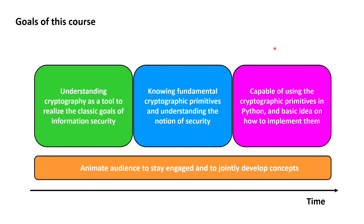Goal number three is that once you complete this course you should be able to apply your theoretical understanding of fundamental cryptography by using the various cryptographic primitives in Python, and even more, to have a basic idea on how to implement the majority of these primitives in Python yourself. I also have a goal for myself: for the whole duration of this course it's my aim to continuously keep you engaged, not just present ideas and solutions right away, but to provoke you with targeted questions and to jointly develop many of the ideas together.